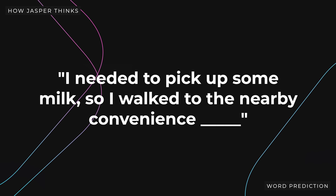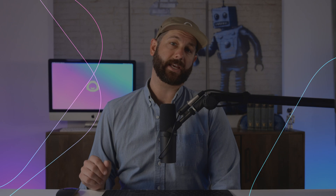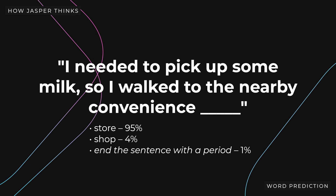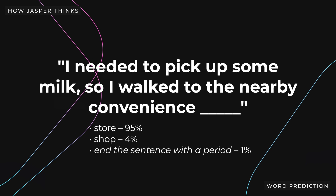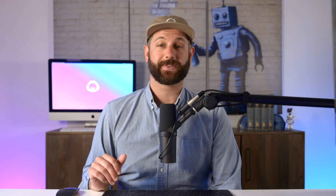Now our sentence looks like this: 'I needed to pick up some milk, so I walked to the nearby convenience blank.' Now Jasper would repeat the process again to decide which word or punctuation mark should come next. His short list of words could look like this: Store, 95%. Shop, 4%. Or a period at a 1% chance. He's almost certainly going to write the word 'store,' but there is a very small chance that he ends the sentence with a period and moves on to the next sentence.